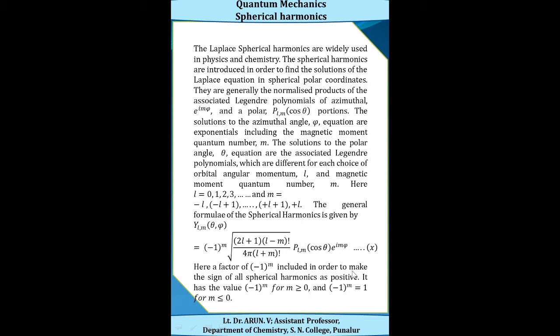The factor (−1)^m is included in this equation in order to make the sign of the whole spherical harmonics positive. The term (−1)^m has a positive value when m is greater than or equal to 0, and (−1)^m is equal to 1 for m less than or equal to 0.